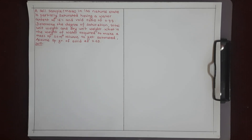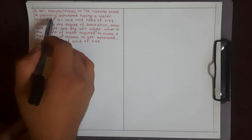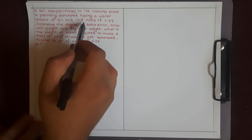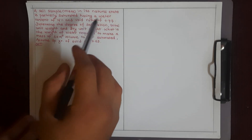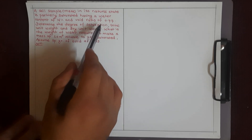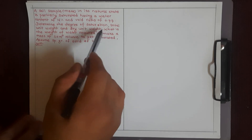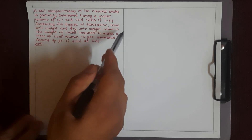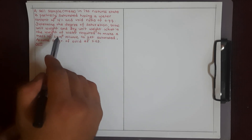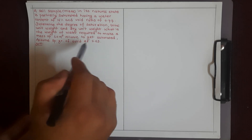A soil sample mass in its natural state is partially saturated, having a water content of 16% and void ratio of 0.77. What is the degree of saturation, total unit weight, and dry unit weight? What is the weight of water required to make a mass of 10 cubic meter volume fully saturated? Assume specific gravity of solid as 2.69.